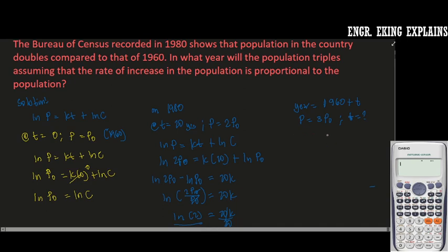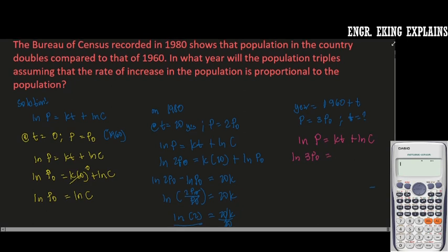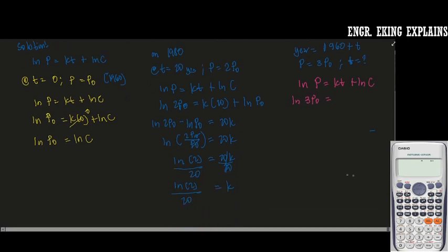At T, it's already given here, so we just write equation: ln P is equal to KT plus ln C. Our ln P is 3P0, our K is ln 2 over 20, so that is